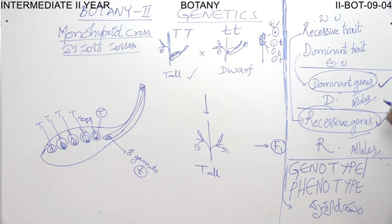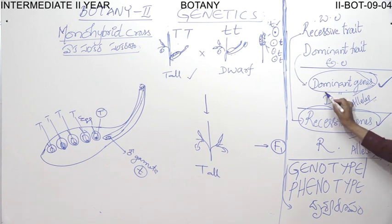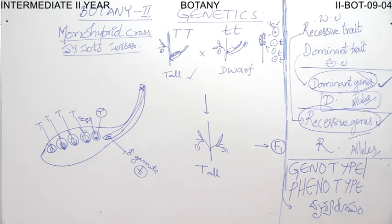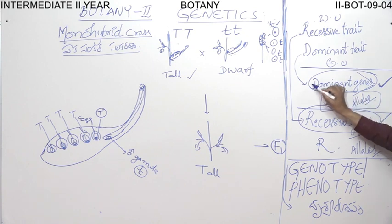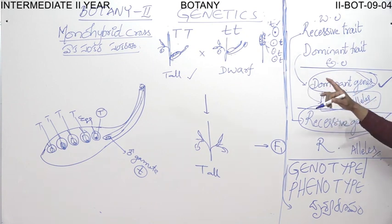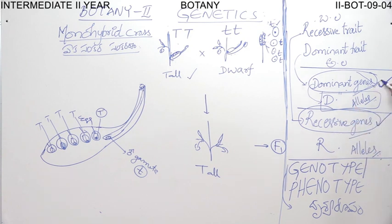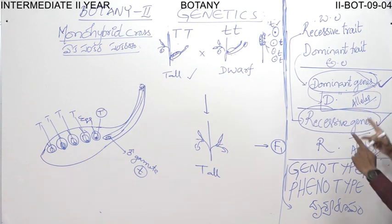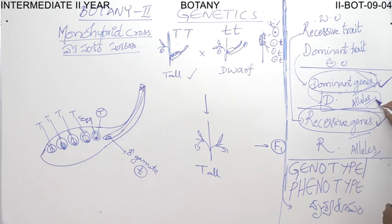Instead of dominant genes, we should use the term dominant alleles. Hereafter, we have to use the term dominant alleles for expressing characters, not just genes. It is no problem if you use the word genes, but the correct and precise word is alleles.